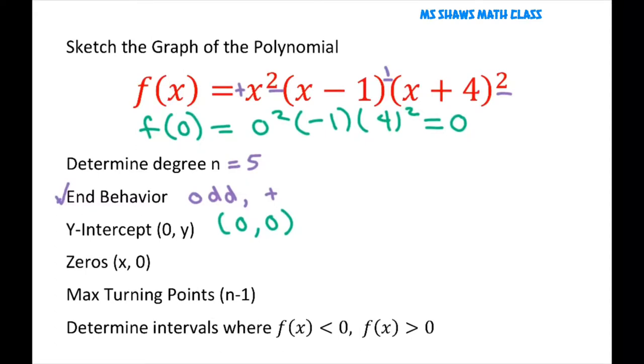Now, to get our zeros, you're going to let y be 0. So that gives you a 0 here, a 1 here, and a negative 4 here. So for our 0, we have 0, 0. And we also have negative 4, 0.